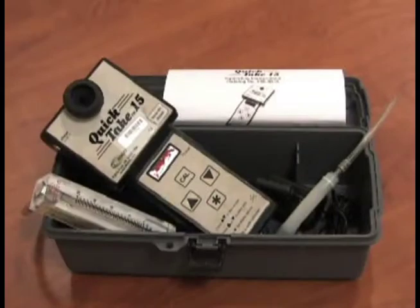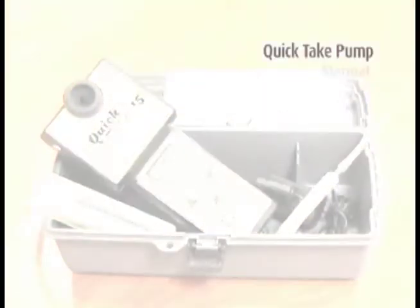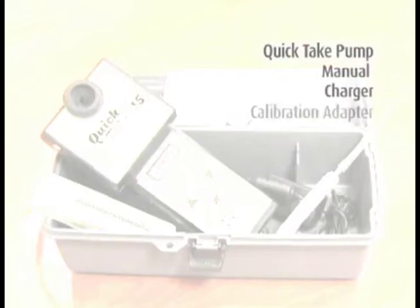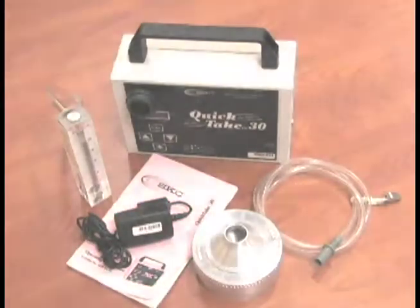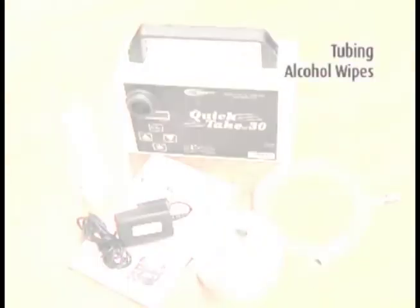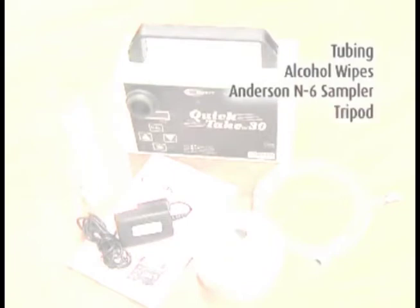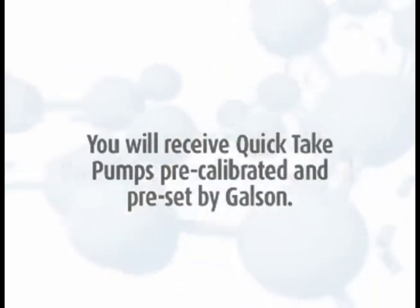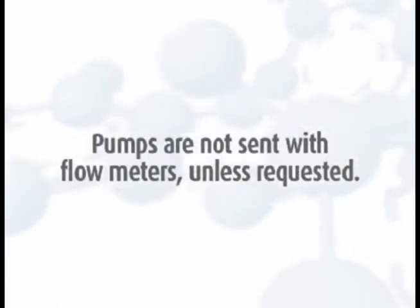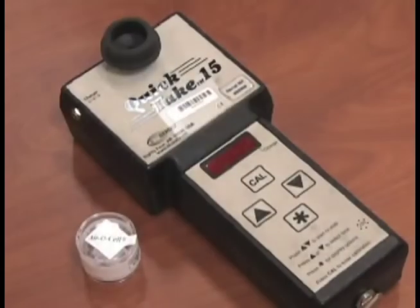The Quick Take microbial sampling pumps come with a Quick Take pump, manual charger, calibration adapter, and if requested, the rotometer. The Quick Take 30 pump also comes with tubing, alcohol wipes, Anderson N6 sampler, and tripod if requested. You will receive Quick Take pumps pre-calibrated and preset by Galson. Pumps are not sent with flow meters unless requested.